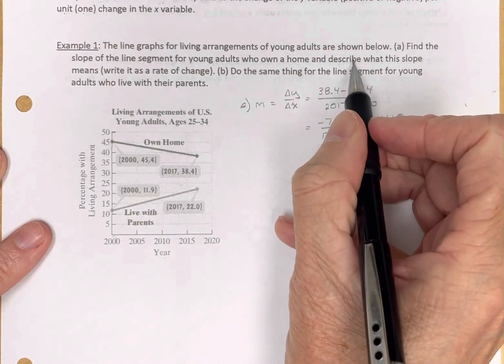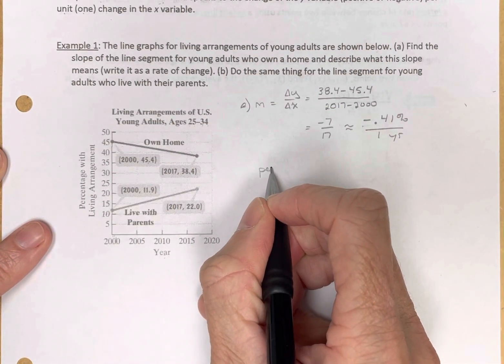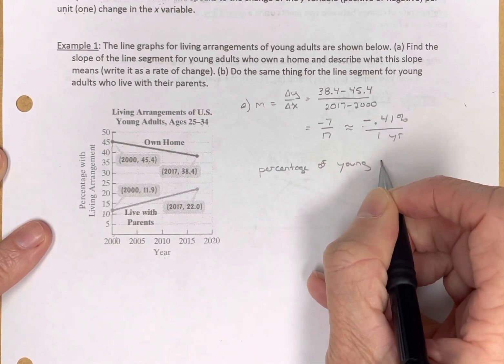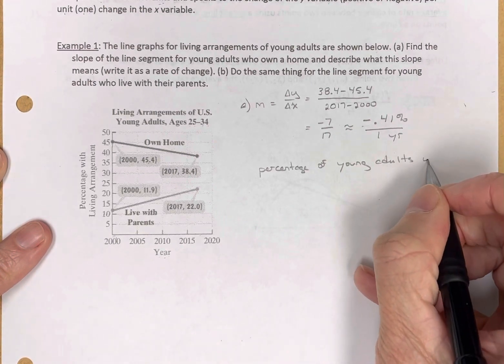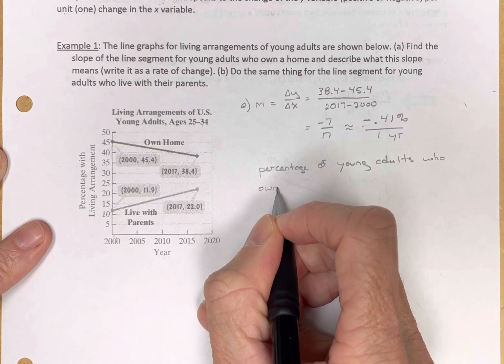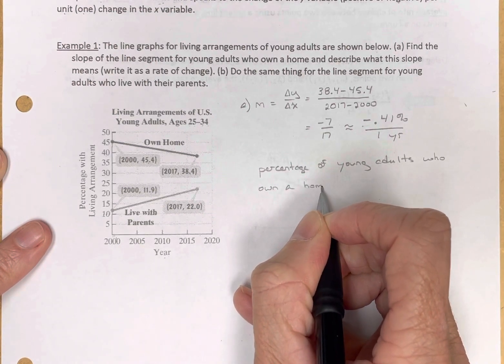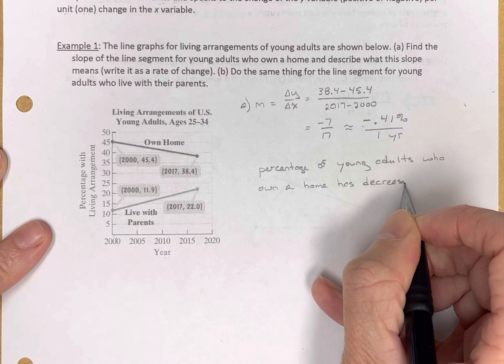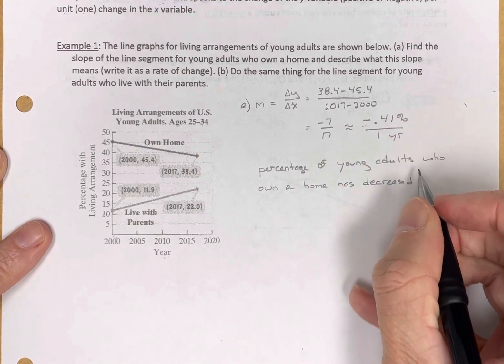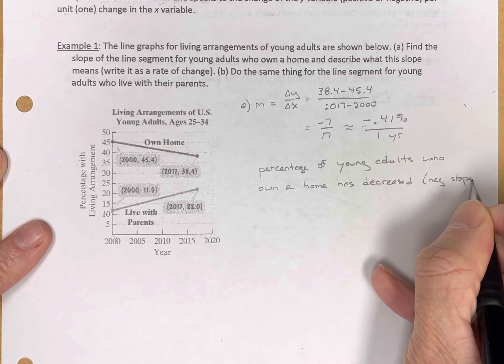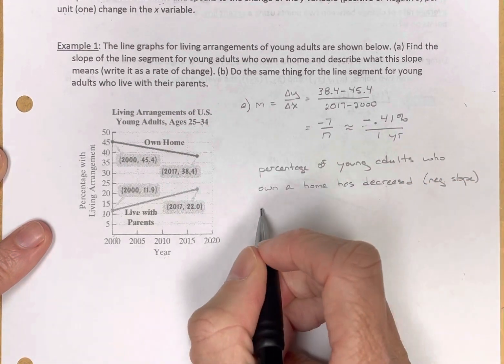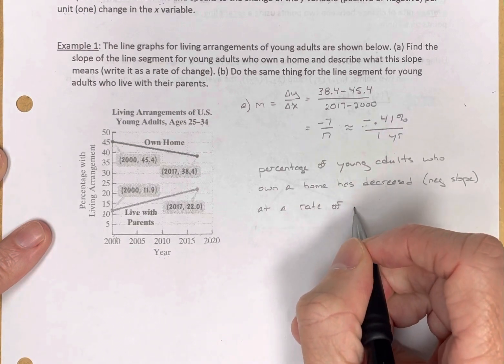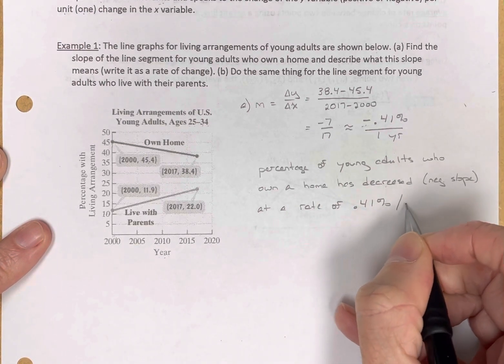We would say, we're going to describe what this slope means. Percentage of young adults who own a home, that's what we're talking about, those who own a home, has decreased. Well, that's because of the negative slope. We know the slope was negative, so we know it decreased. So we're replacing the negative with the word decreased. At a rate of, this is rate of change, at a rate of 0.41% per year.